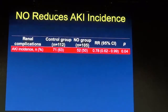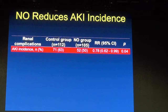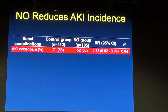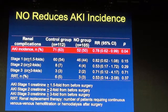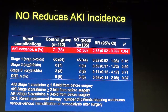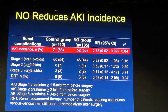Nitric oxide reduced the incidence of acute kidney injury from 63% in the control group to 50% in the nitric oxide group. Most patients had stage 1 AKI, with fewer stage 2 and stage 3. Renal replacement therapy was used in six patients in the control group and three in the nitric oxide group.